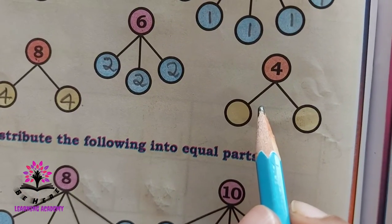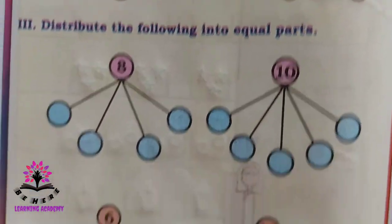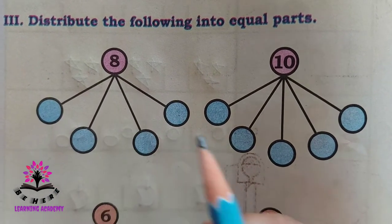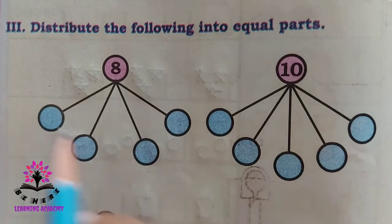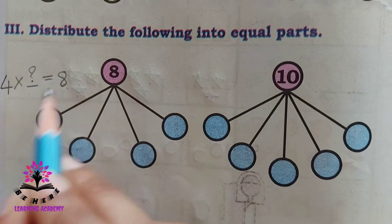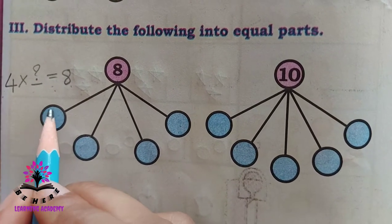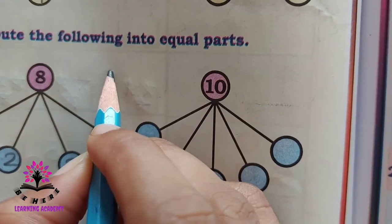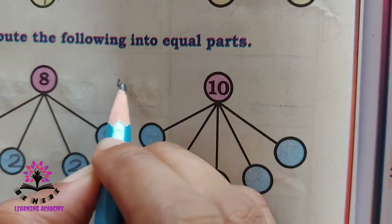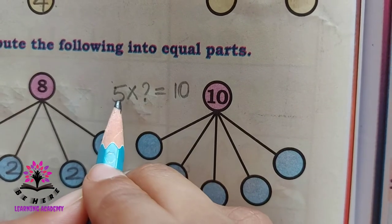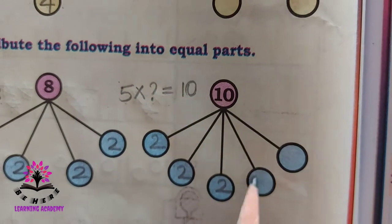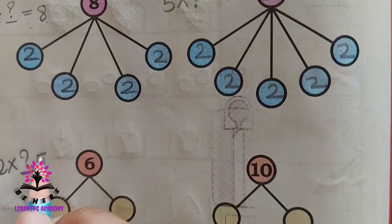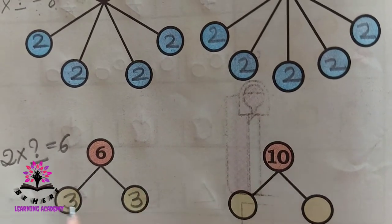Four — what's the answer, students? This one you have to do by yourself. Distribute the following into equal parts. Eight is there in four boxes — four twos are eight, so you have to put two each. Here also: ten is given and five boxes — five twos are ten. Six and two: two threes are six, three plus three is six. Ten and two: you have to make five and five.